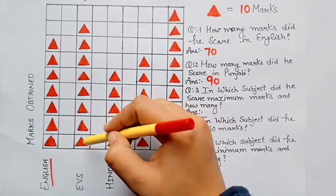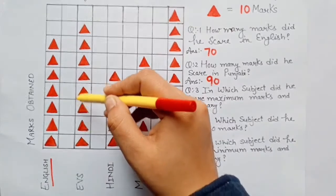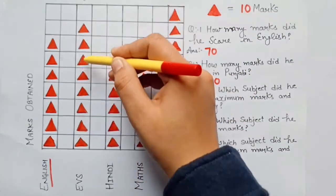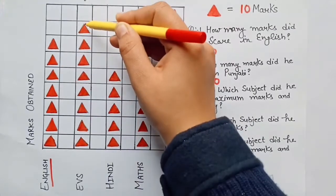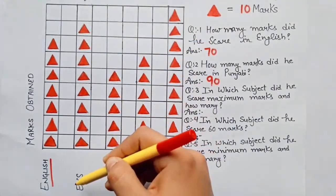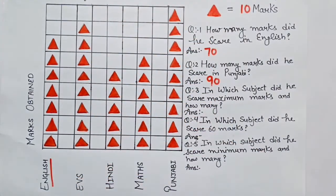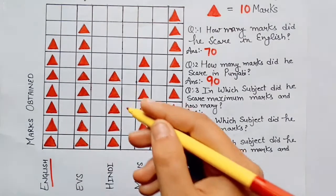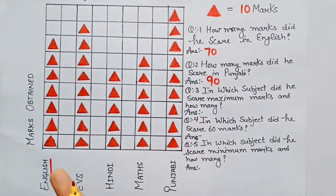In EBS there are 8 triangles. 8 multiplied by 10 equals 80. Usne EBS mein 80 marks liye hain.